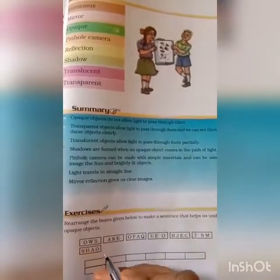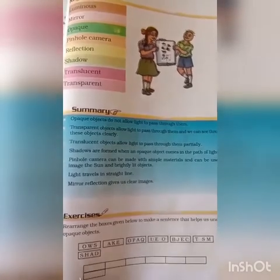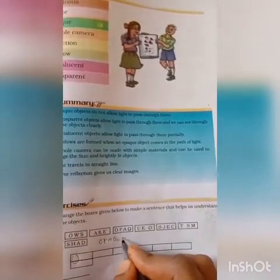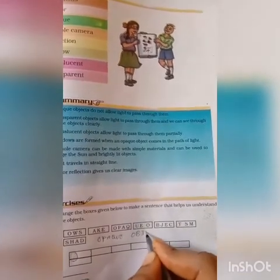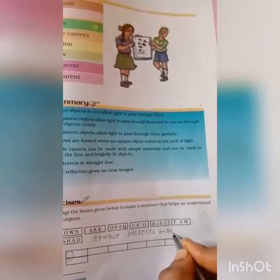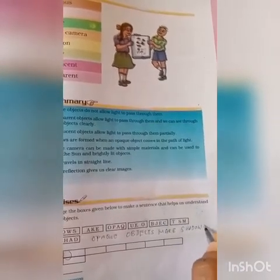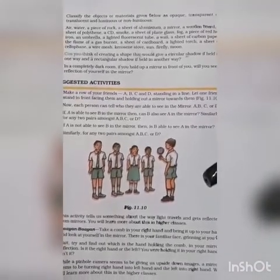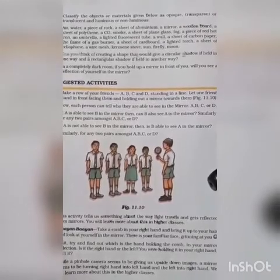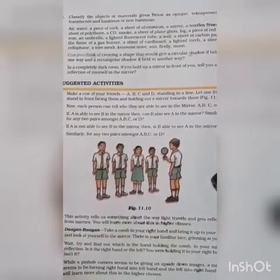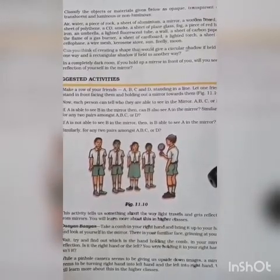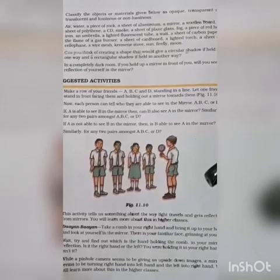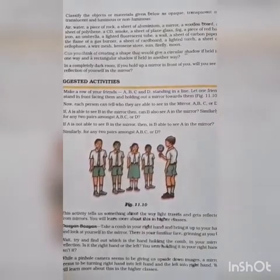You can see that the opaque objects make shadows. The objects are given below as opaque, transparent or translucent, and luminous and non-luminous objects. These are the types of opaque objects.